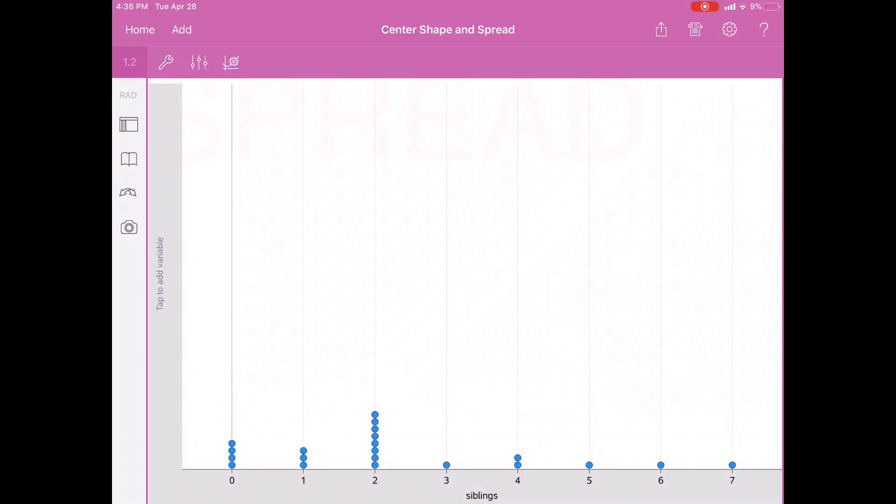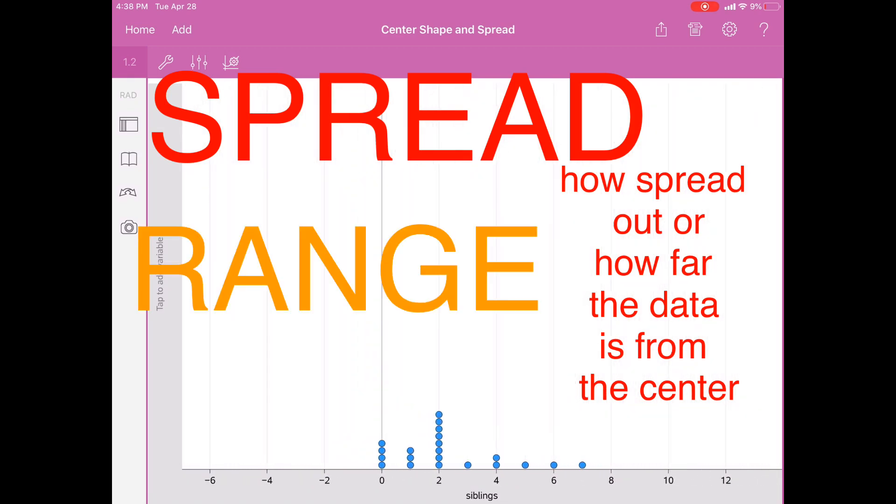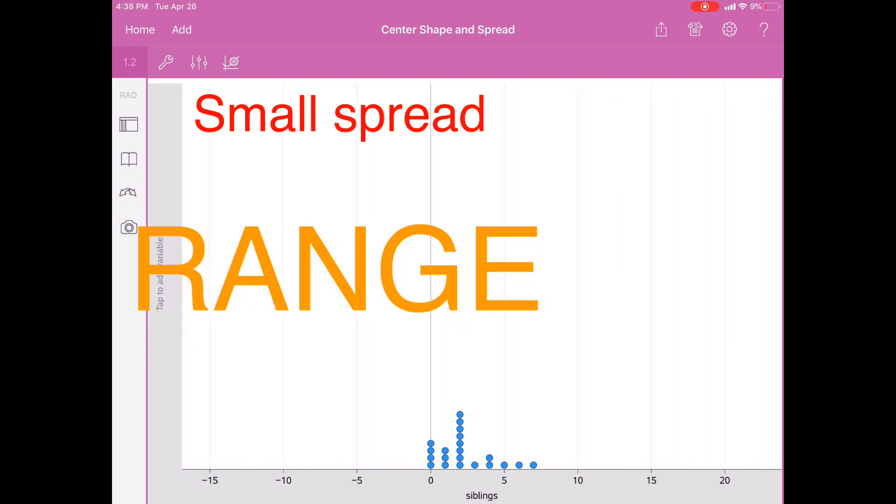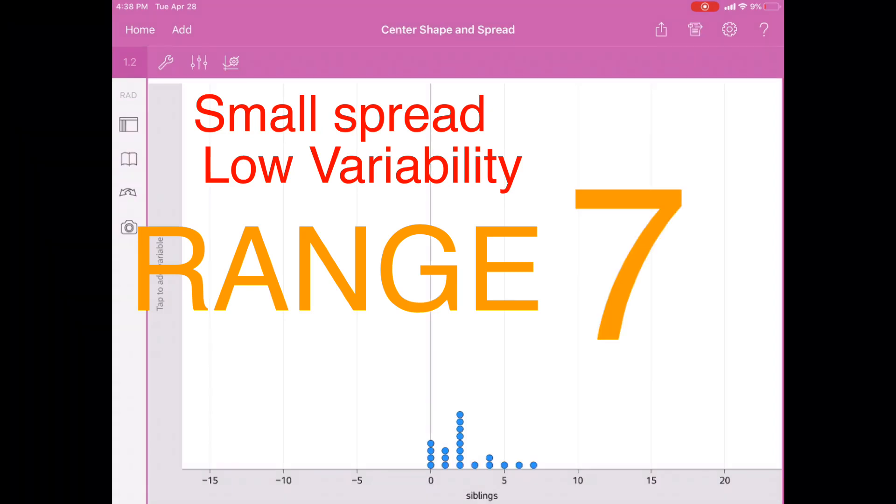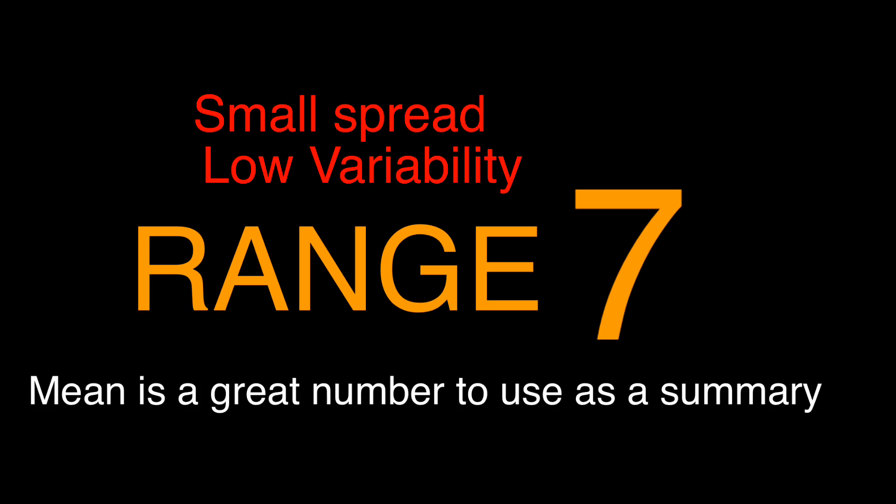The spread refers to how spread out or how far away the data is from the center. One way to measure spread is the range. This data has a small spread and a low variability with a range of seven. Low variability means there isn't a big difference between data points, therefore the mean is a great number to use as a summary.